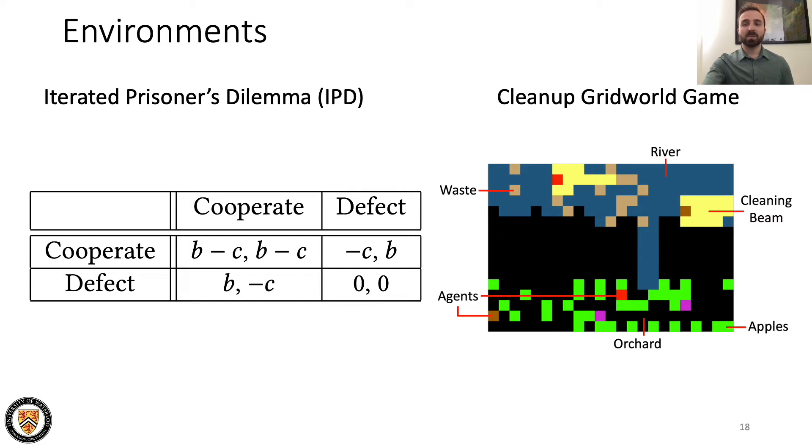We analyze how credo impacts multi-agent learning in social dilemmas with active provision, defined as when cooperation carries a cost. Social dilemmas are challenging environments of considerable interest to the recent multi-agent reinforcement learning community. We choose to evaluate credo in the iterated prisoner's dilemma, or IPD, and cleanup grid world game environments.